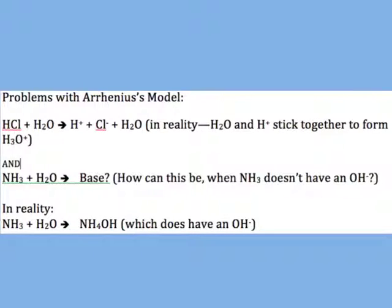The next model — the Bronsted-Lowry model, which we'll talk about — deals with some of those limitations and increases our understanding of acids and bases. That, in a nutshell, is the Arrhenius model of acids and bases. Make sure you watch the video closely, take good notes, and bring any questions you have to class.